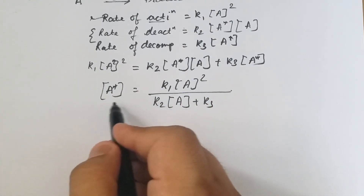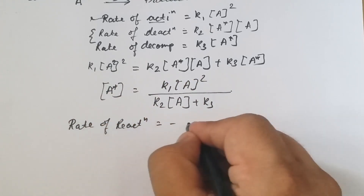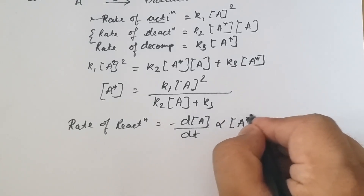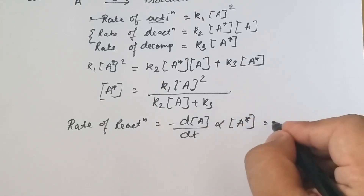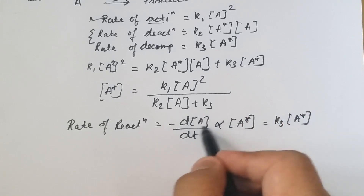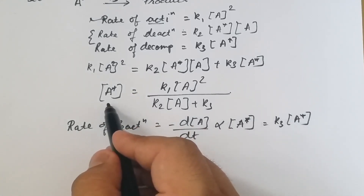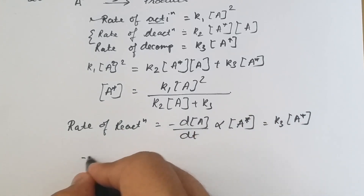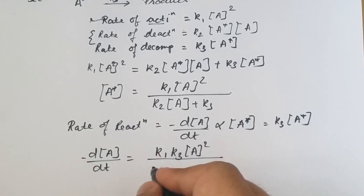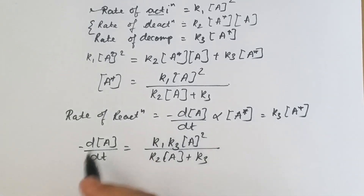Therefore the rate of reaction — that is, -d[A]/dt — equals k₃[A*]. Since the reactant is being consumed, we write the negative sign. Substituting the expression for [A*], the rate of reaction becomes: -d[A]/dt = k₁k₃[A]² / (k₂[A] + k₃). This gives the rate law for a unimolecular reaction, but we cannot directly determine the order from this representation.